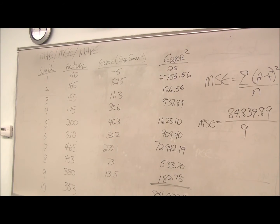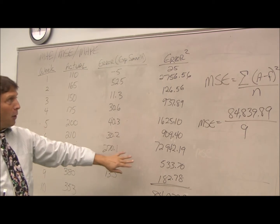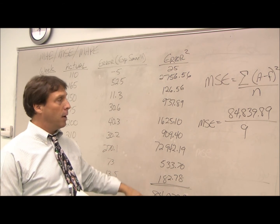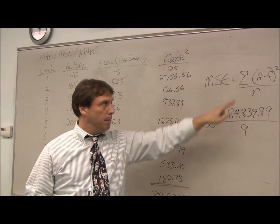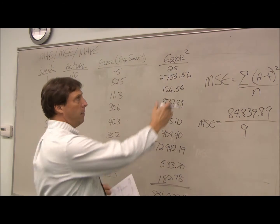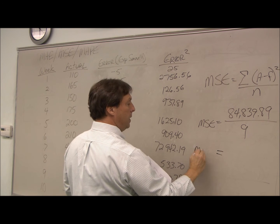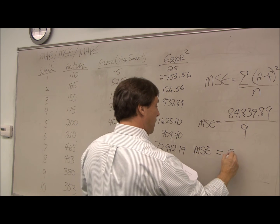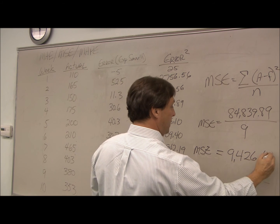Okay, we just went in and we put in the squares of our errors, summed them up at the bottom, and for our MSE calculation, we just take our summation and divide it by the number of errors that we had in the calculation. So our mean squared error comes out to 9,426.65.